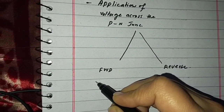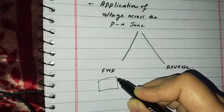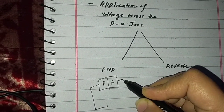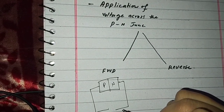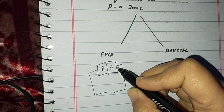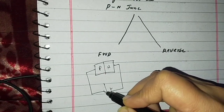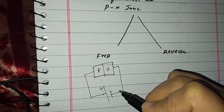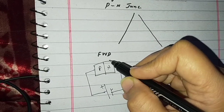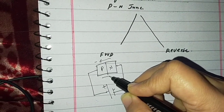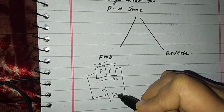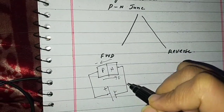First we will discuss forward biasing. In forward biasing of the P-N junction, we attach a battery such that the N side connects to the negative terminal and the P side connects to the positive terminal. This makes possible the maximum flow of current — positive to positive and negative to negative. It provides enough energy to the electrons to move across, which equals the movement of holes in the opposite direction, in the direction of conventional current.